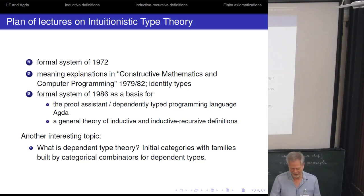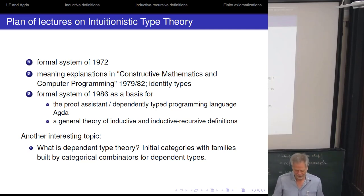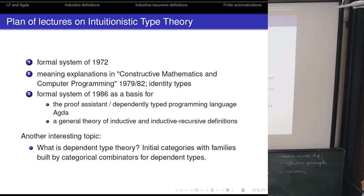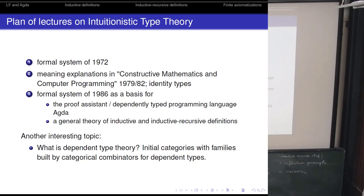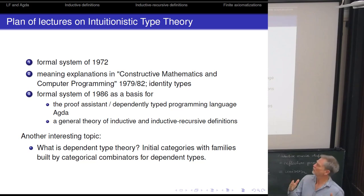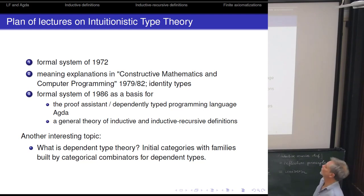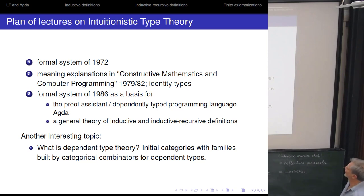In doing that, he set up intuitionistic type theory and gave primitive meaning explanations for it, explaining why it can be used as a programming language. In the first lecture I presented his original 1972 system, which stands today as a very important basic point — a kind of minimal Spartan type theory. In the second lecture, I concentrated on the meaning explanations, and wanted to get up to the identity type at the end, because Simon was then going to speak about homotopy type theory, which originates with the identity type.